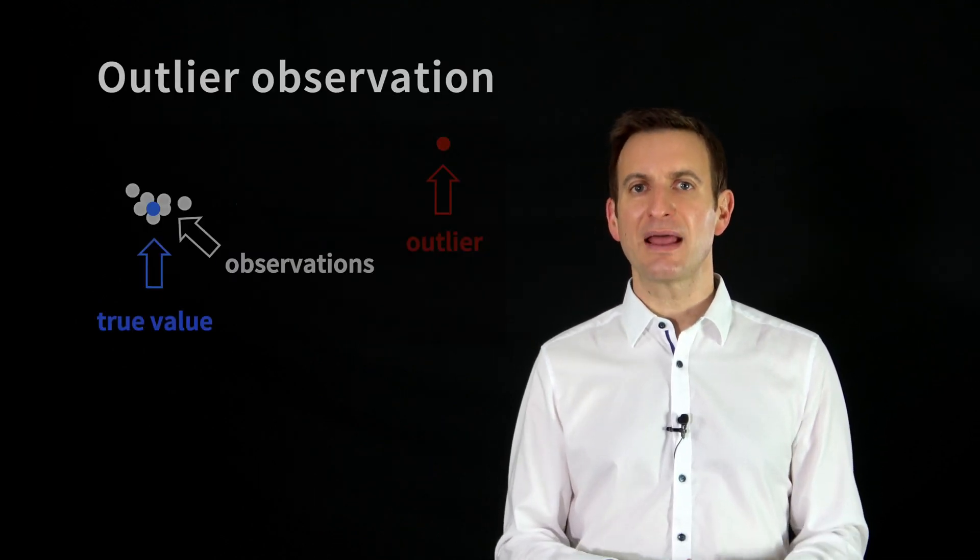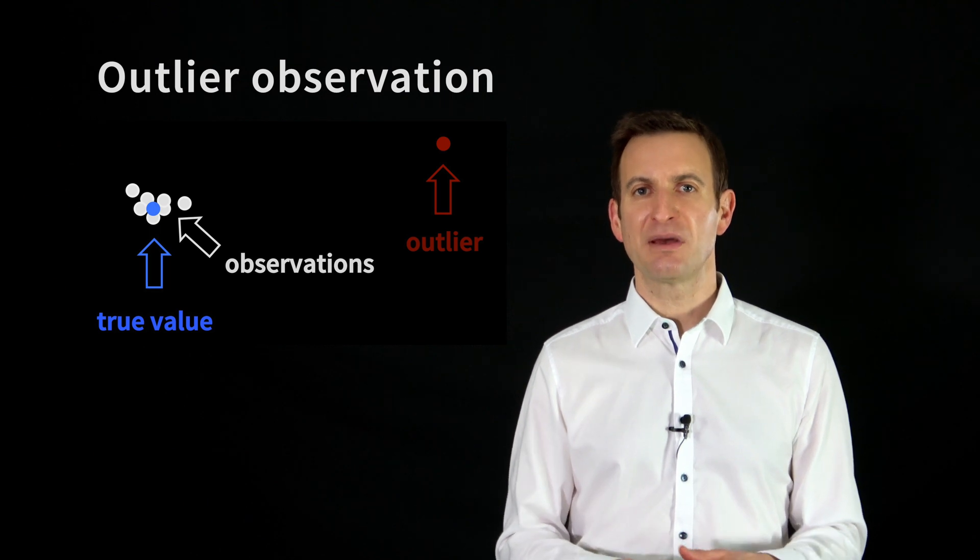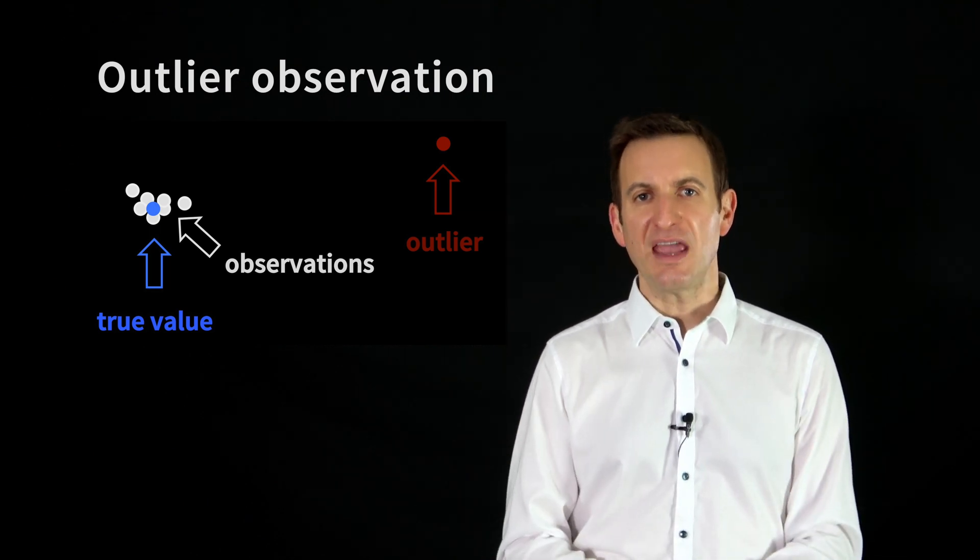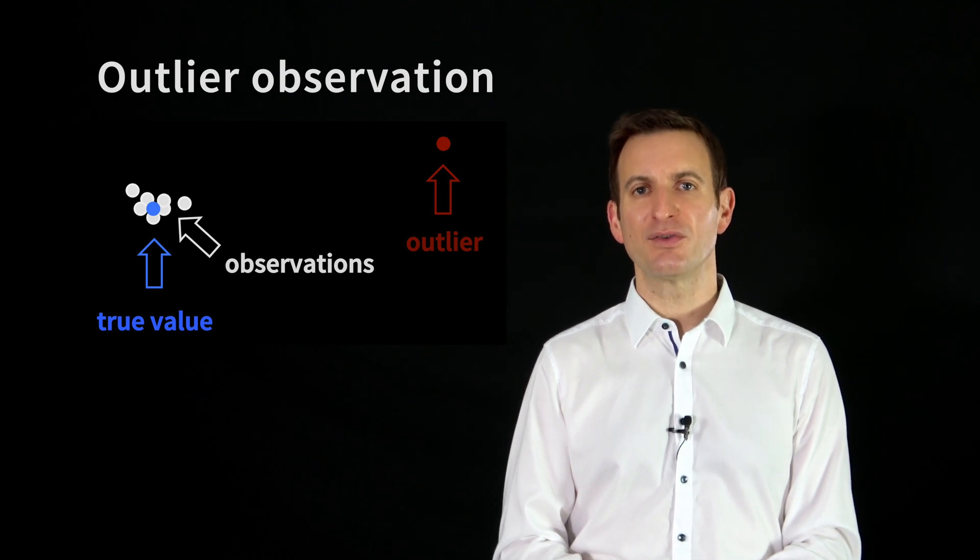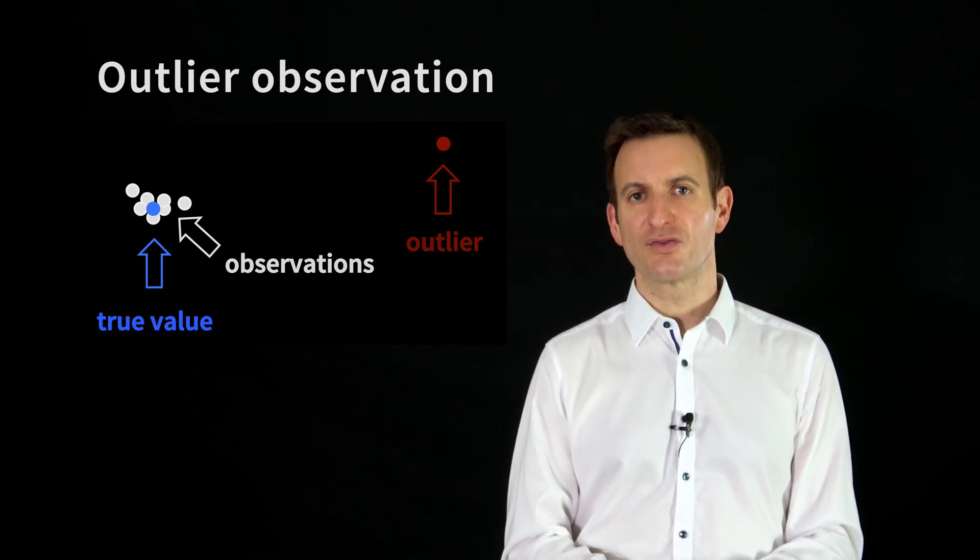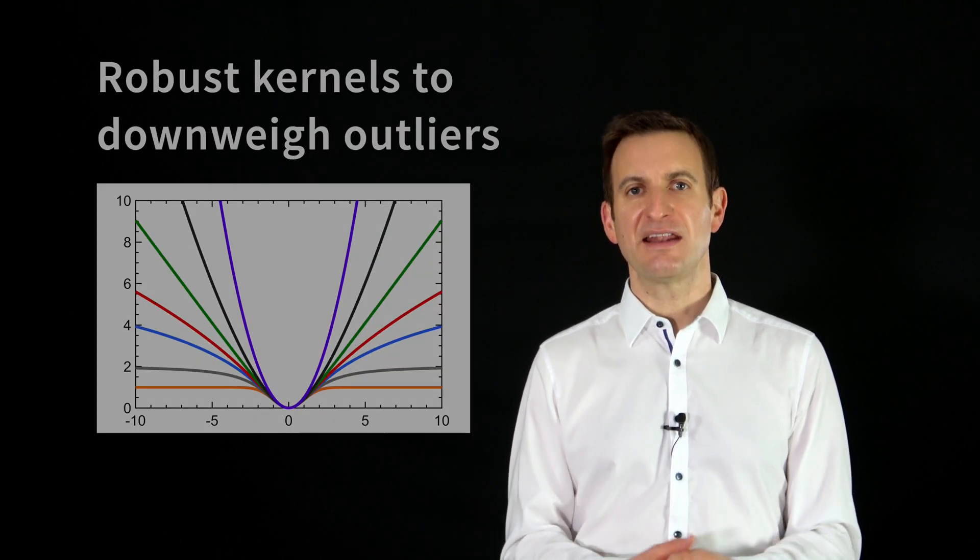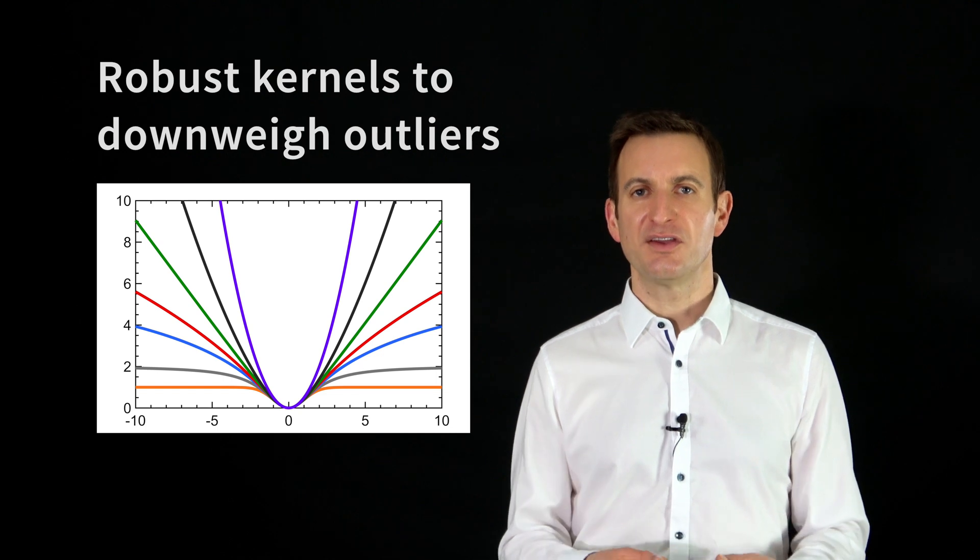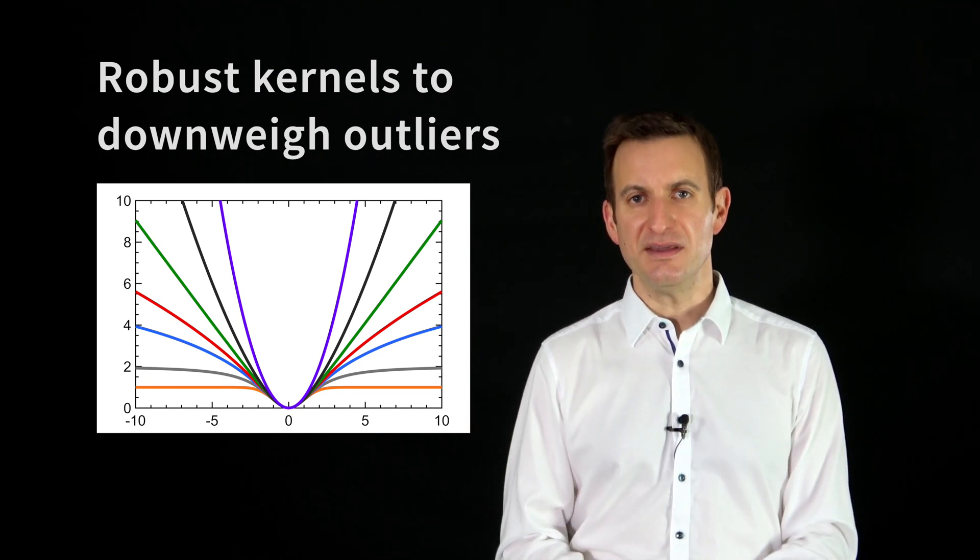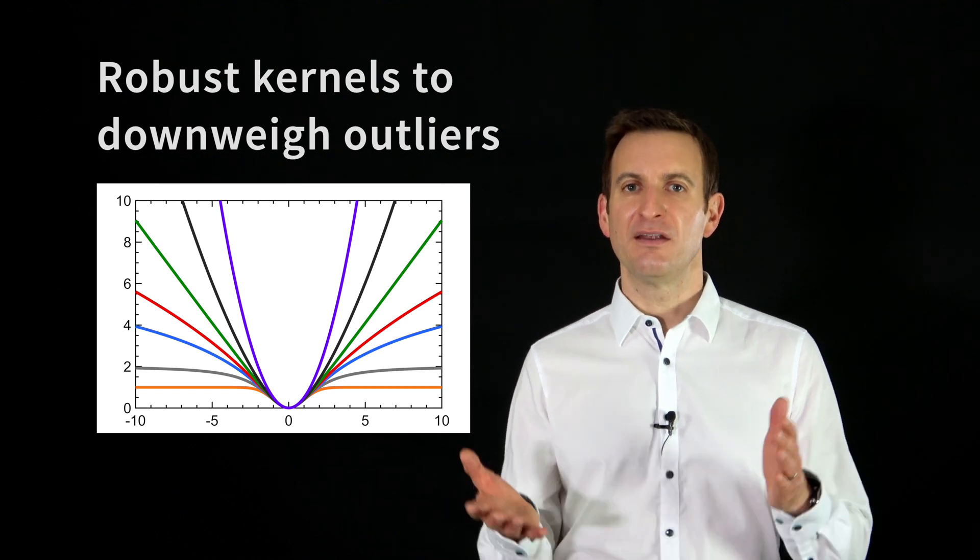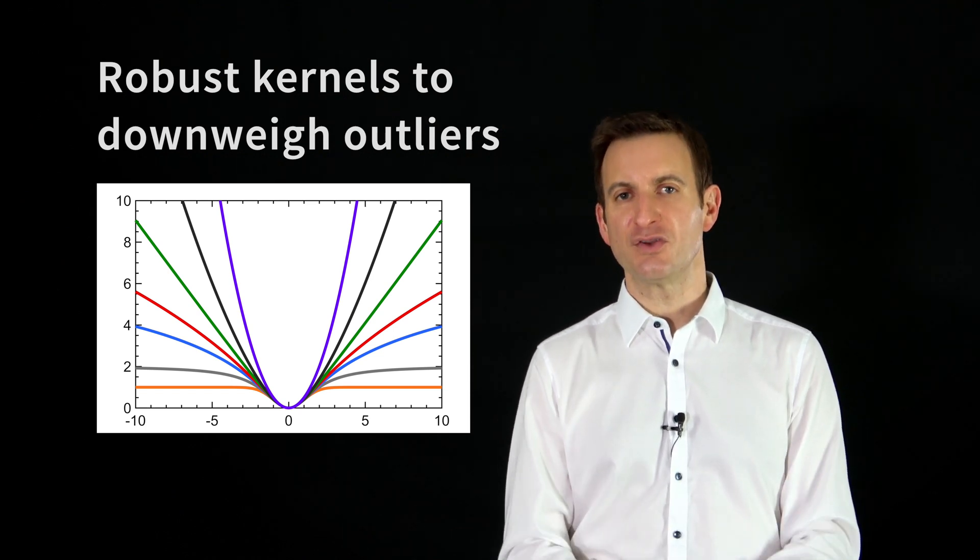In real world problems you typically have to deal with outlier measurements. You will have some observations which are grossly wrong and you need to take that information into account to not diverge to a wrong solution or wrong local minima. You need techniques such as robust kernels to down weight the effect of these outliers or gross errors and then focus only on those which appear to be the right ones.